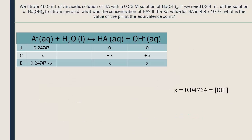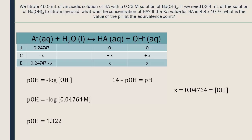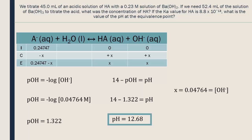Now we just need to solve for the pH. We will find the pOH first, then the pH. We could have also found the concentration of H⁺ and then the pH directly. We round the answer to two significant digits because the Ka only had two significant digits. The pH is 12.68.